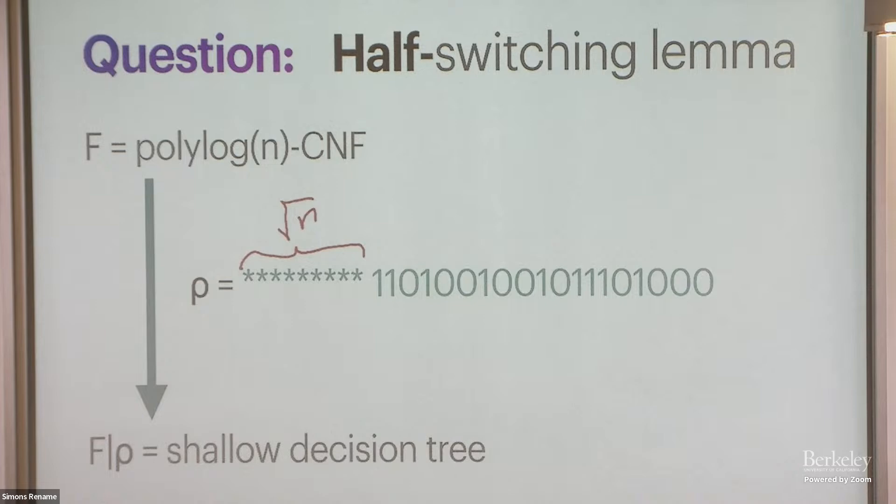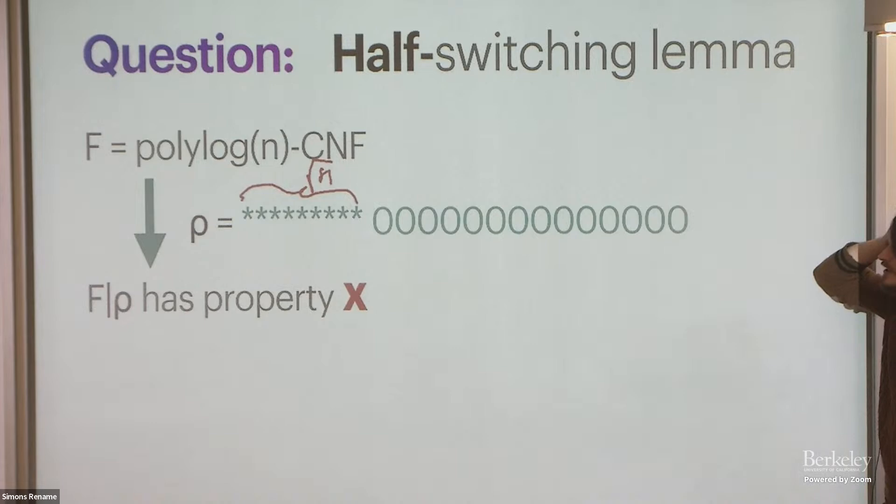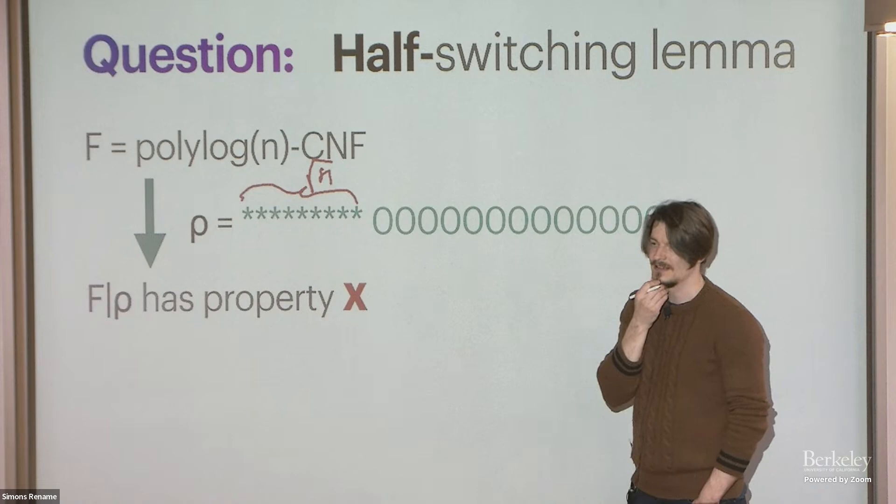Well, I want a variation of this now. I say what happens actually if I only half-restrict? So I don't put in both zeros and ones. I just put in zeros. So still I choose some root n variables to leave unset at random, but the remaining I set to zeros. So what happened? This is my half-restriction. So what happens? What happens to the CNF? What kind of property does it gain from the restriction?